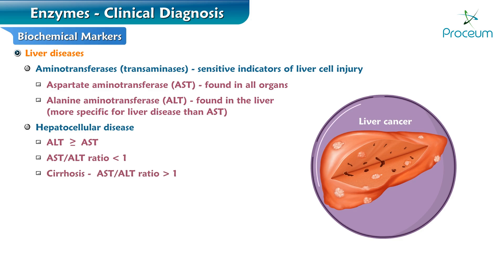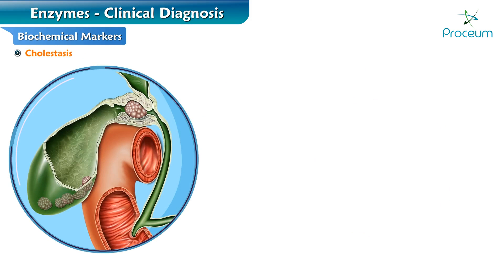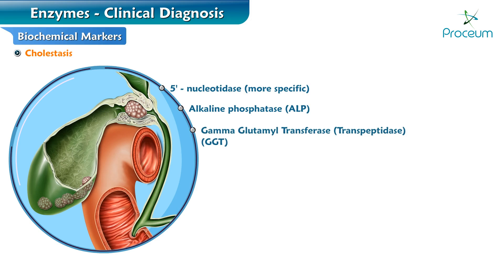In cirrhosis, the AST-to-ALT ratio becomes greater than 1. Enzymes whose elevation in serum reflects cholestasis include 5'-nucleotidase, which is more specific than ALP and GGT; alkaline phosphatase, or ALP; and gamma-glutamyltransferase, or GGT, which is mainly used to identify occult alcohol use.